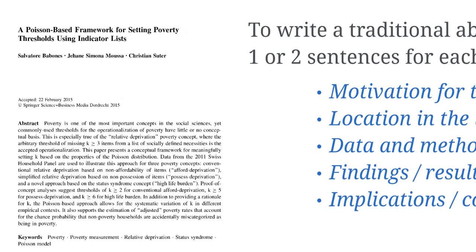I summarize the finding, which is that within the relative deprivation universe, k greater than or equal to two is actually probably a better parameter than k greater than or equal to three. And then I draw the implications of this — how you can problematize this parameter k in poverty research.